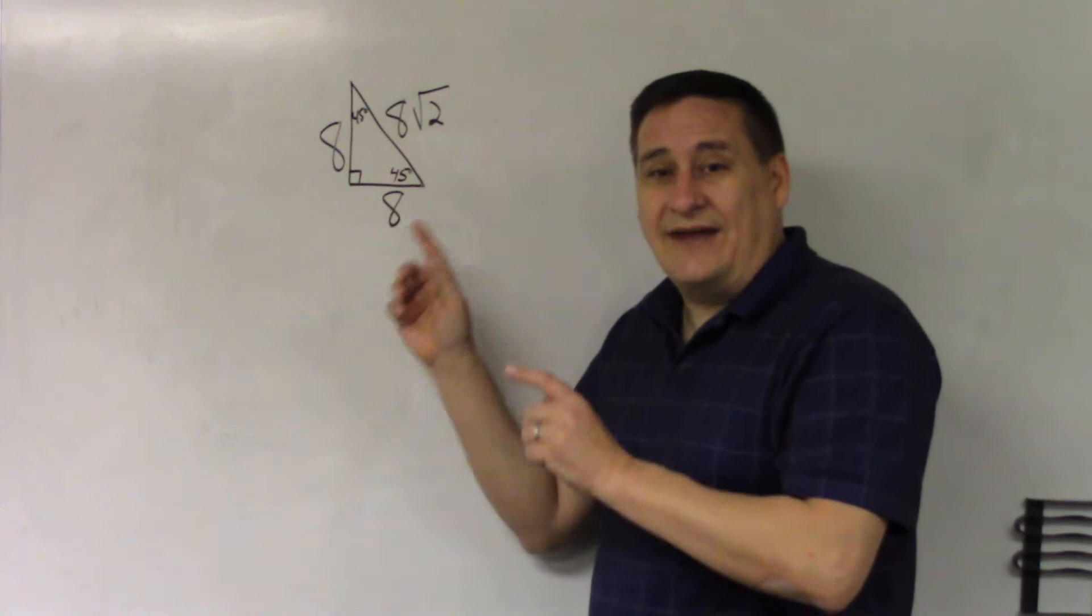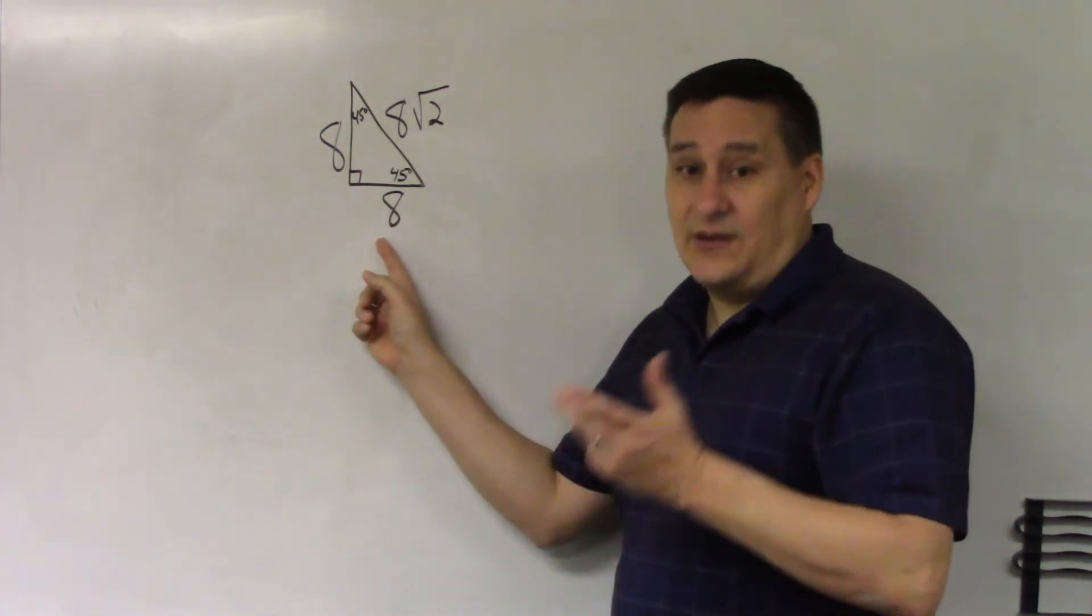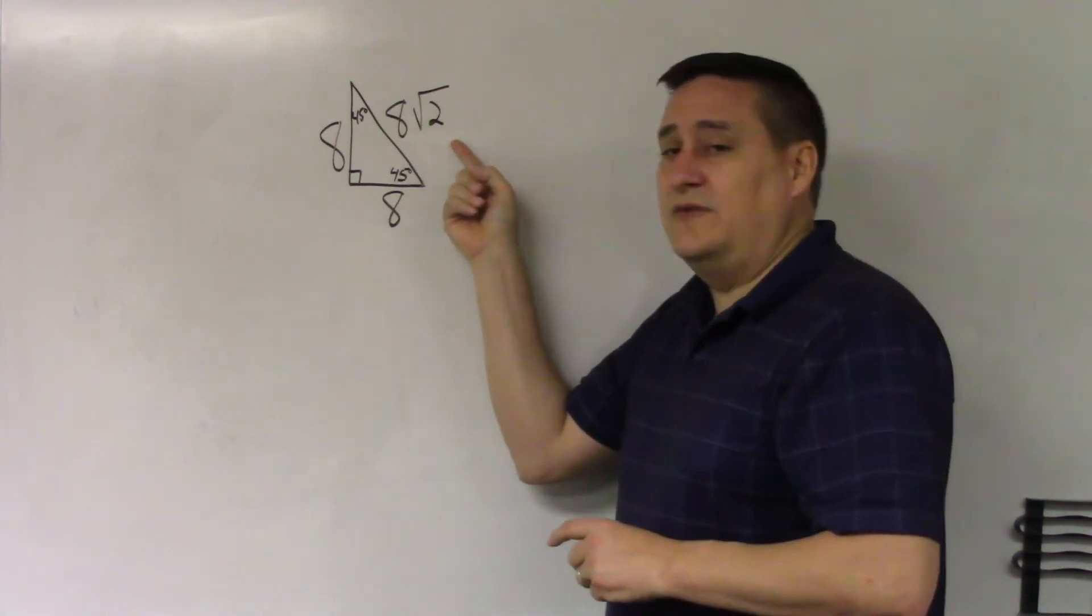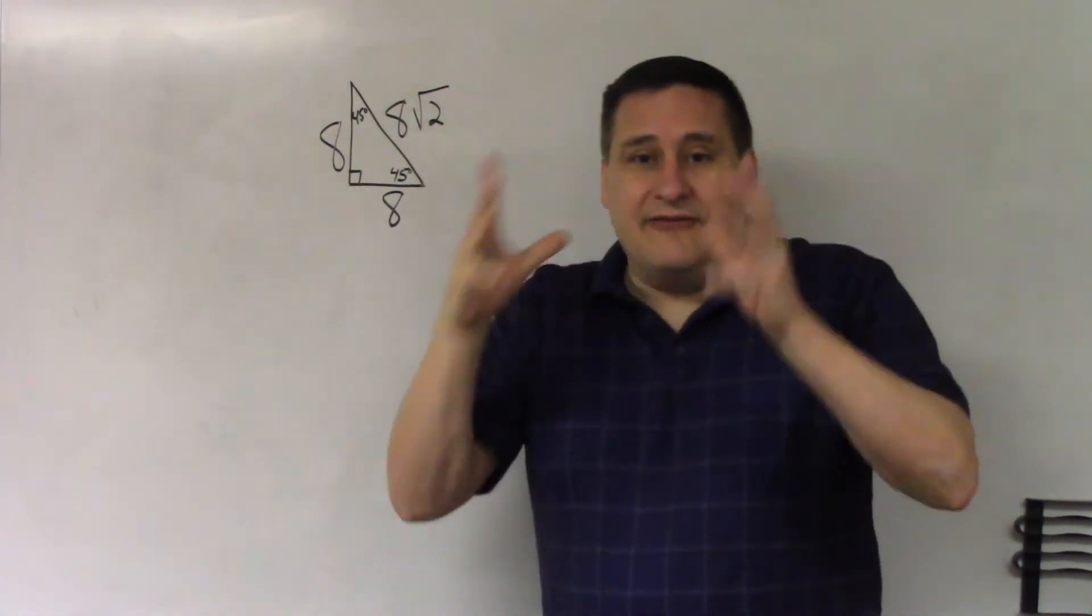Here's the relationship you have to have memorized. Whatever the side values are, and they will be the same, the hypotenuse will be that value times its special value of the square root of 2. That's easy, though. That's memorizing it forwards.